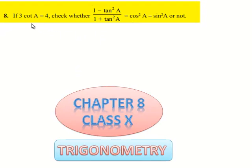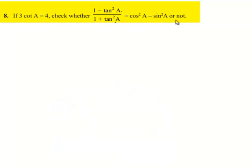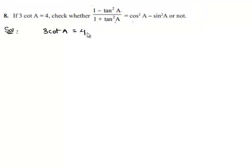Moving on to the 8th question: if 3 cot a is equal to 4, check whether (1 minus tan square a) by (1 plus tan square a) is equal to cos square a minus sin square a or not. Now moving on to the solution, it is given that 3 cot a is equal to 4, which implies cot a will be equal to 4 by 3.